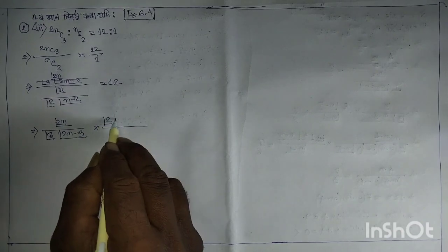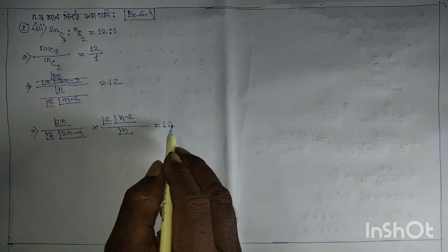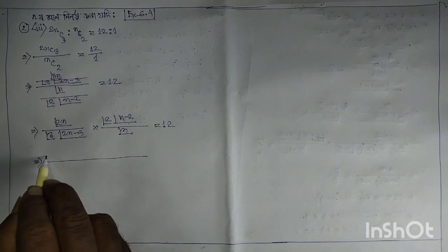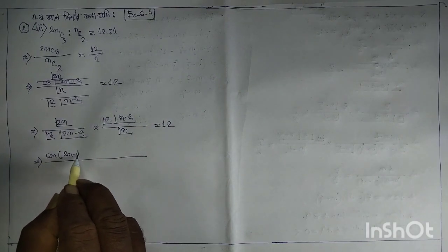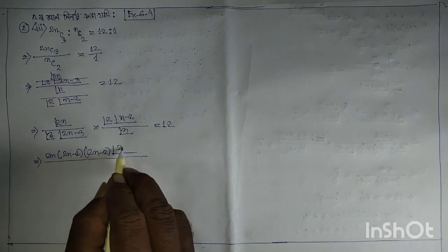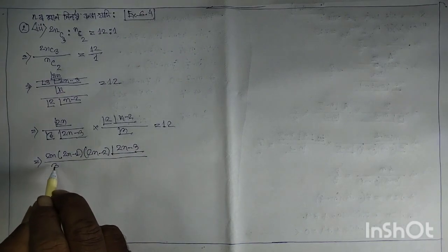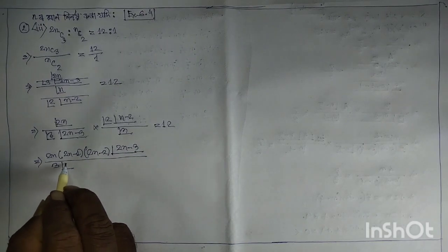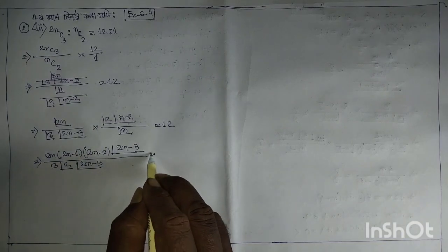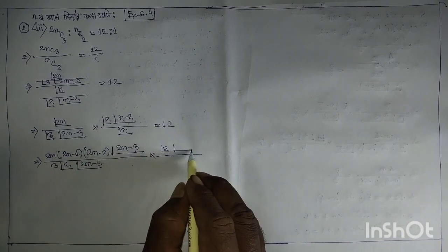Factorial 2 by factorial n equal to 12, implies twice n into twice n minus 1, twice n minus 2, factorial twice n minus 3, by factorial n into factorial 2, factorial n minus 3, into factorial 2, factorial n minus 2.